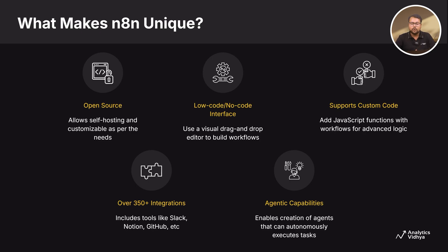N8N connects with 350-plus popular apps like Gmail, Slack, and Google Sheets — your tool talks to other apps without you lifting a finger. Lastly, N8N also enables agentic capabilities. You can build smart assistants that do tasks on their own using AI — for example, one that summarizes emails and sends updates while you sleep.